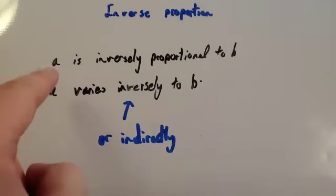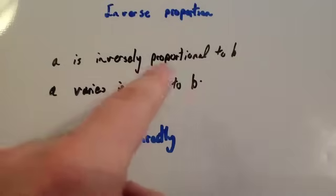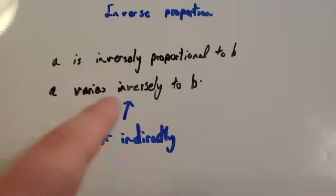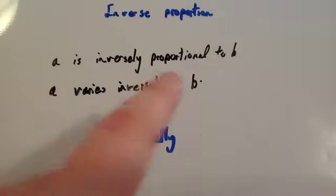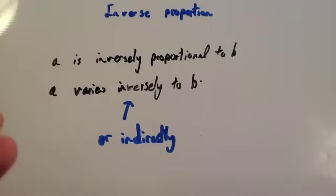So, watch out for in a question something like this. A is inversely proportional to B, or A varies inversely to B, or indirectly to B, or indirectly proportional. So, they're the things to watch out for to know if it's an inverse proportion question. Let's have a look at an example now.